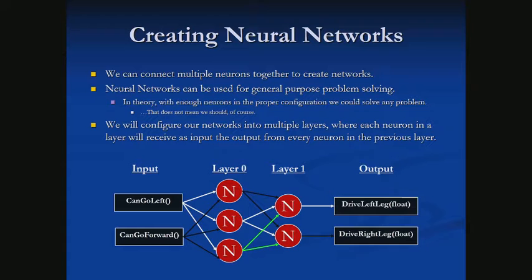The output layer is the output of our full neural network, and hopefully it's making correct decisions. Layer 0, layer 1, and conceivably more layers — these are where our actual neurons live. They're often called hidden layers. We could have any number of layers with any number of neurons in each, theoretically.